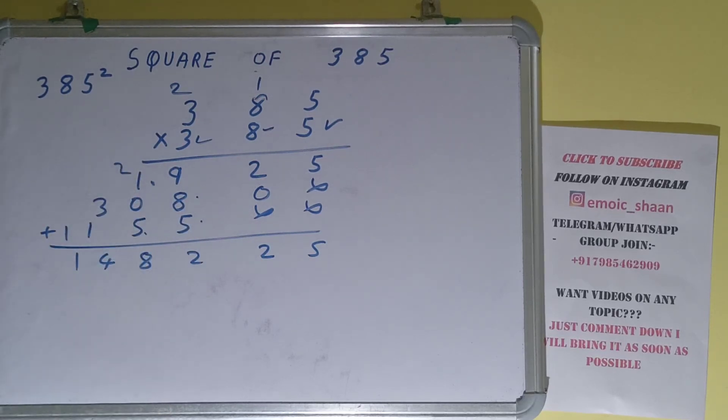Okay, so the answer will be 148,225. That will be the square for the number 385. So this is all. If you found the video helpful, please hit the like button, do consider subscribing, and thanks for watching.